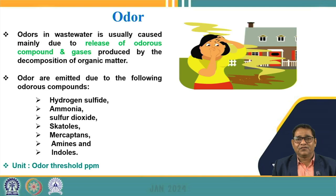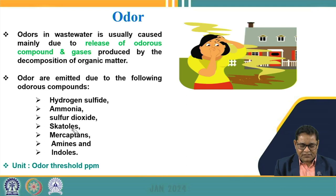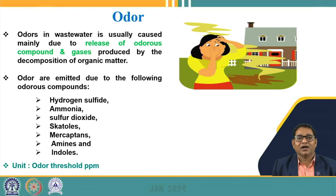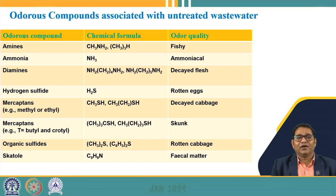Another physical parameter is odor. Odor in industrial wastewater is very common and may be because of the release of various odorous compounds and gases produced during degradation of organic compounds. The major odor-causing compounds include hydrogen sulfide (H₂S), ammonia, sulfur dioxide, musketols, mercaptans, amines, and indoles. Odor is measured by its threshold odor number, with units of ppm (parts per million).